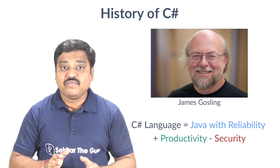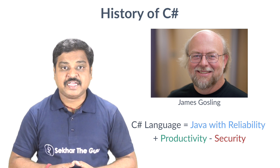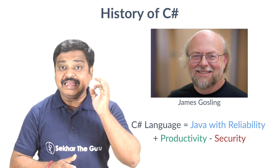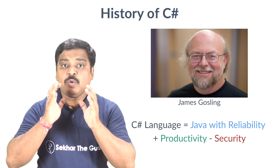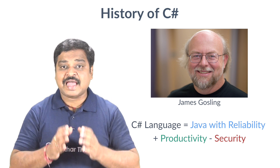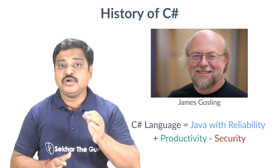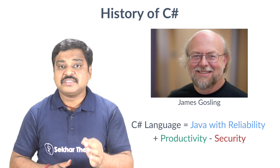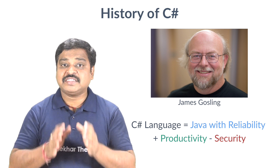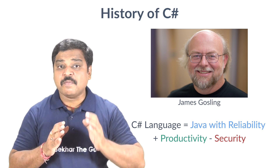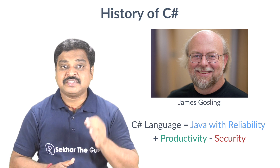Instead, C Sharp would be much closer to C++ in design, and this point is clearly understood by the name itself. Over the period of time, both languages Java and C Sharp grew in two different directions, becoming somewhat less similar. C Sharp has added several major features to accommodate functional programming style.